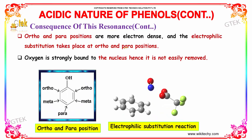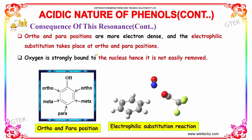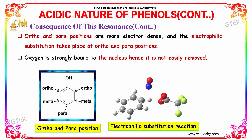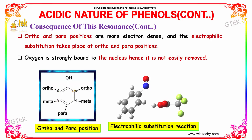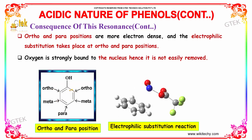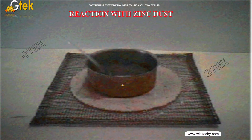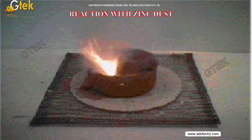The ortho and para positions are more electron dense, so electrophilic substitution takes place at ortho and para positions. Oxygen is strongly bound to the nucleus. In a compound, there are ortho, meta, and para positions, with only one para position found.